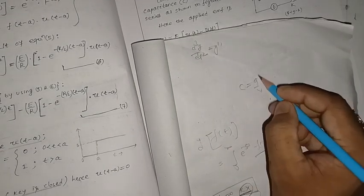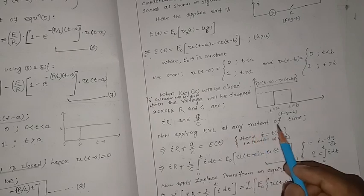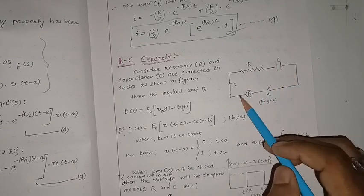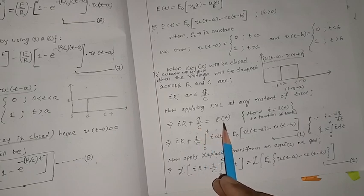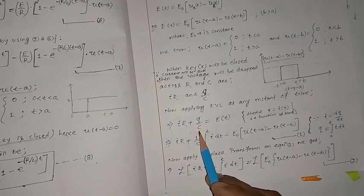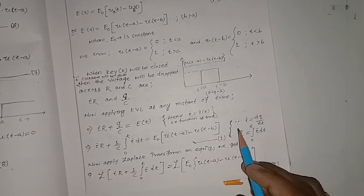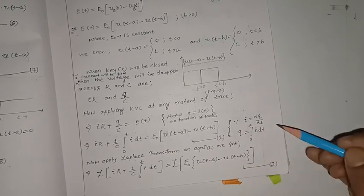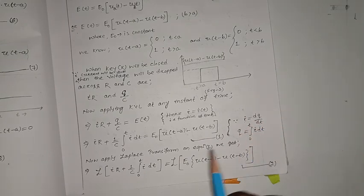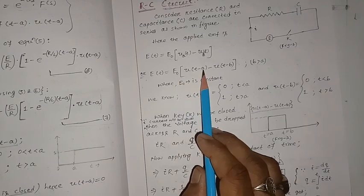Applying Kirchhoff's Voltage Law at any instant of time, the voltage dropped across all elements equals the applied voltage. So: iR + Q/C = e(t). Now Q can be written as the integral from 0 to t of i dt, because current i equals dq/dt, so Q equals the integral of i dt from 0 to t. Substituting: iR + (1/C)·∫₀ᵗ i dt = e(t), which equals E₀·[u(t−a) − u(t−b)]. This is equation number one.